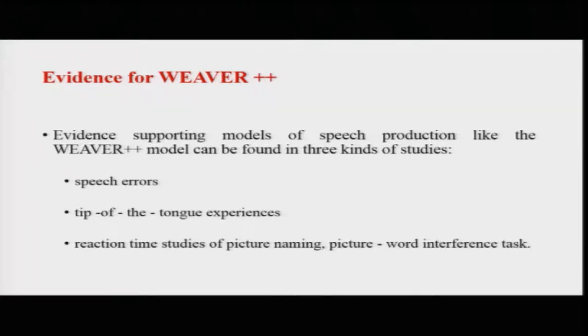A major source of evidence — when you really want to theorize about how speech is produced — comes from asking what kinds of errors people are making. If you look at the speech output of individuals for one hour, ten hours, or a hundred hours, what kinds of errors are you most likely to find, and what do those errors tell you about the speech production process? We will try to see where the source of these errors could be with respect to the levels model of speech production.